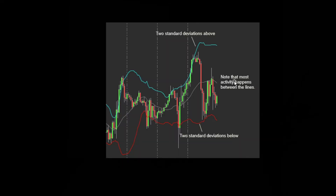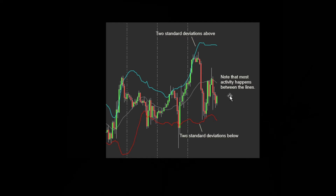Bollinger Bands — again, one of the very few indicators that we use. It's based on the standard deviation principle. We know that 95% of all activity happens within two standard deviations. We see two standard deviations above on the blue line and two standard deviations below on the red line. Most activity happens between these lines.